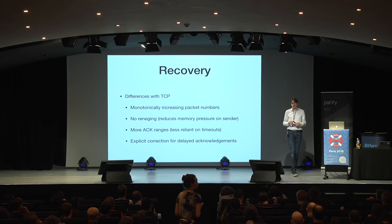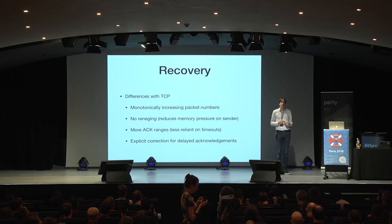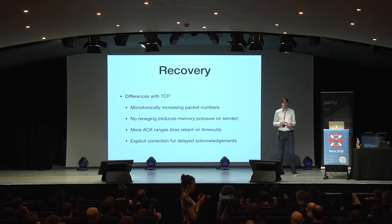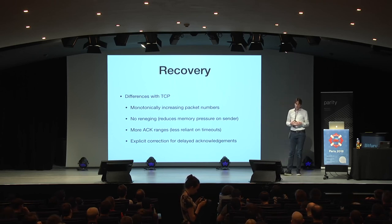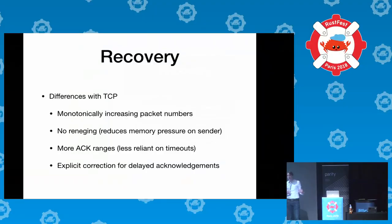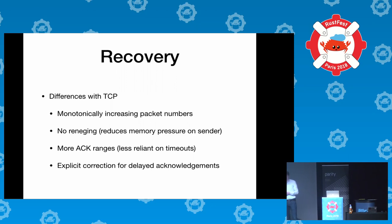Finally, there is an explicit correction for delayed acknowledgments. As a receiver, you might choose not to send acknowledgments immediately for every packet you receive — for example, it's more efficient to group acknowledgments. But that makes it harder for the sender to determine the round trip time. So in QUIC, the delay between receiving a packet and sending the acknowledgment for it is made explicit, so that you can reliably estimate the round trip time.